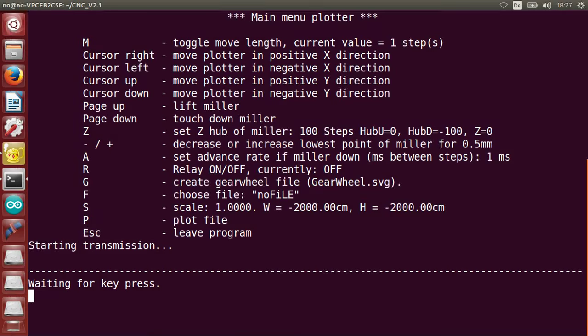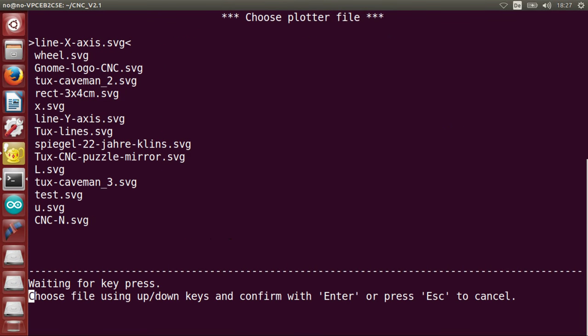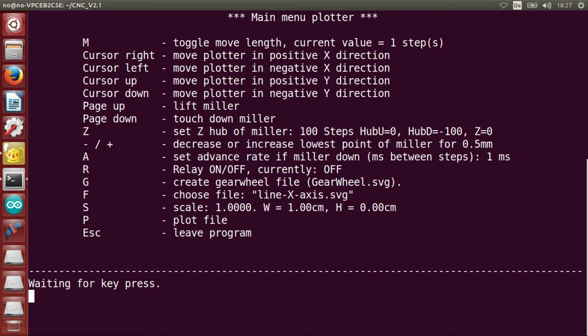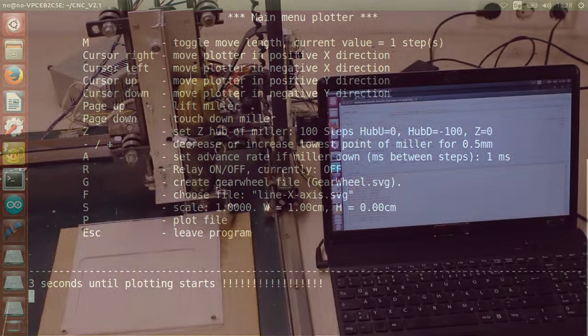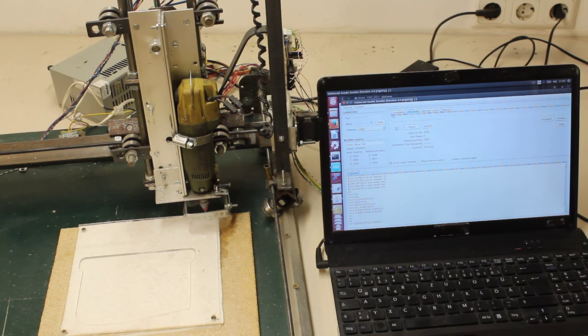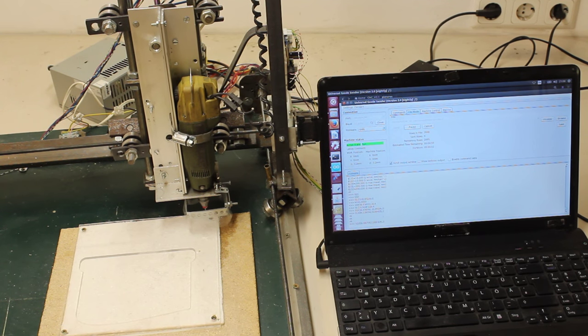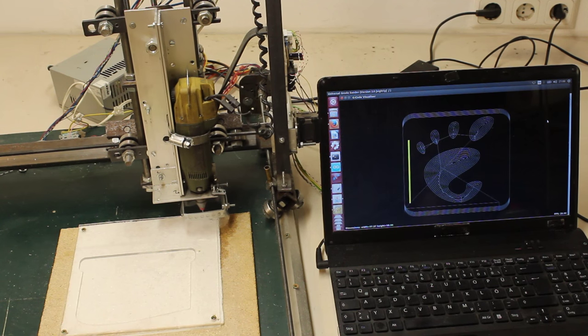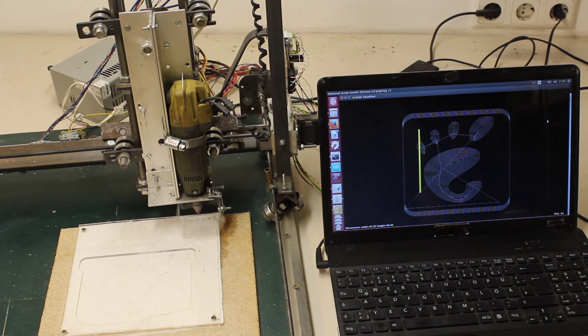Same as with version 2.0, I am using my own command line software to control the machine and process scalable vector graphics with all paths converted to polygons. After upgrading to version 2.1 you can load the GRBL software on the Arduino, enabling the CNC to process G-code.